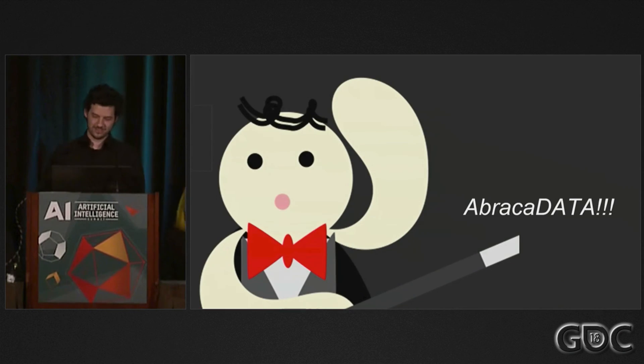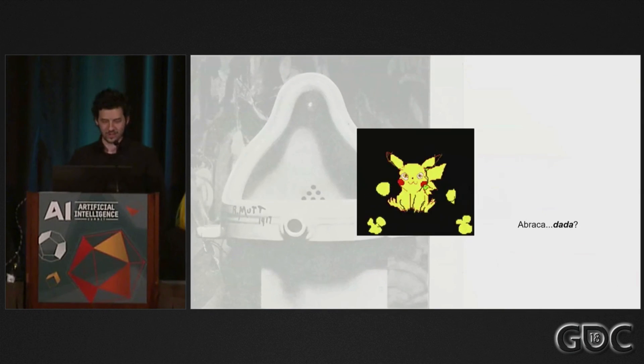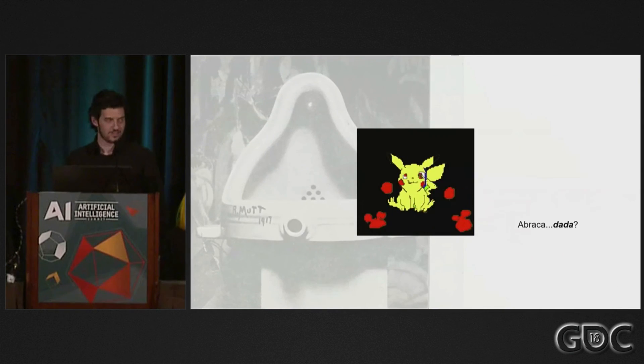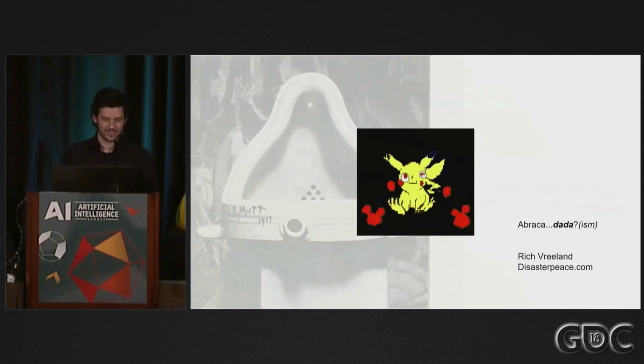You could let the volume level of a creature's mating call drive the probability that other creatures respond in kind. You could light a room using the average color of the last 60 frames, because why not? You could take the wave propagation system used to drive visual wind effects and map it to the size of an NPC's shoes. But in any case — abracadata, or perhaps abracadada? Thanks.